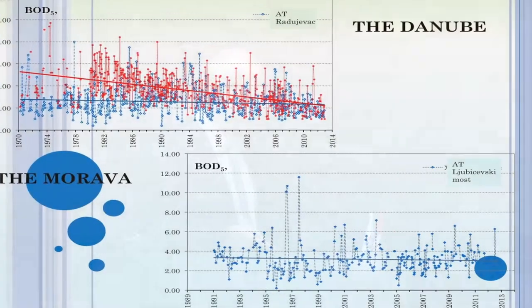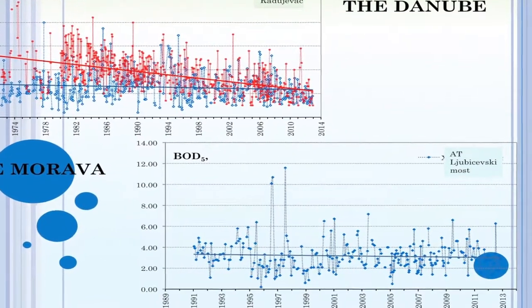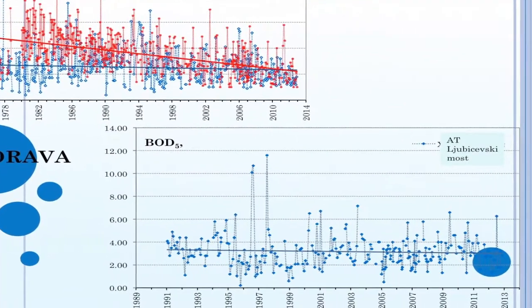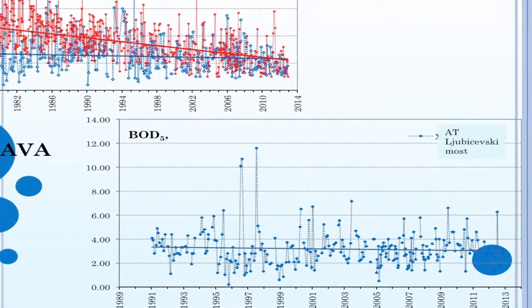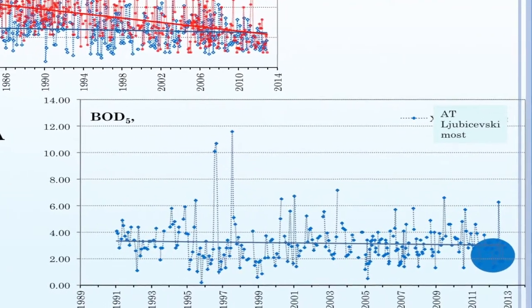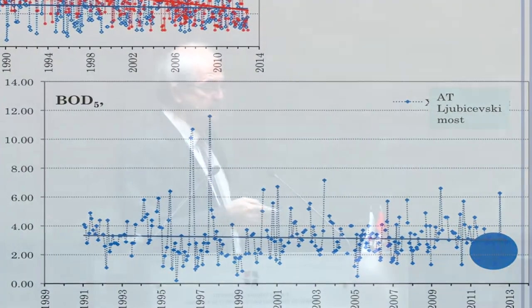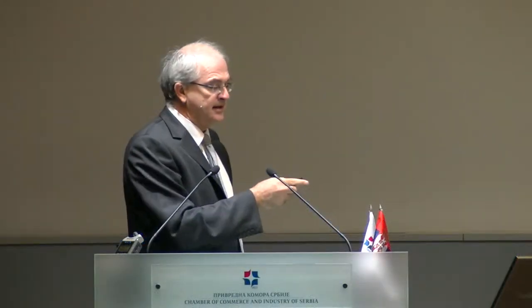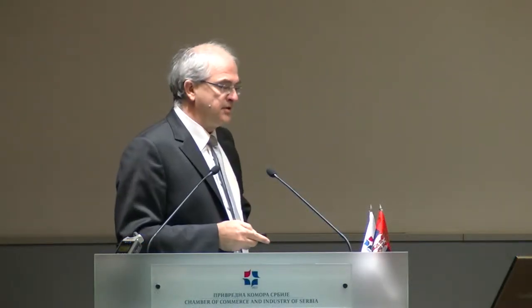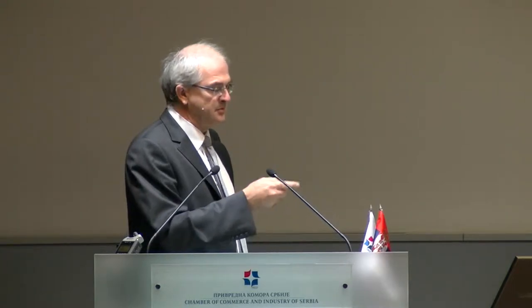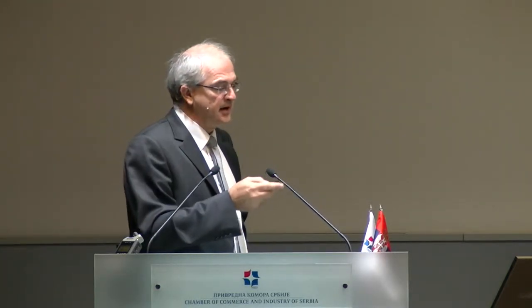The bottom diagram shows BOD at the mouth of our biggest national river, Morava. We see that it practically stagnates over time, due to the lack of wastewater treatment plants. Water quality levels for the Morava are higher — worse — than for the Danube because of the lack of treatment and natural conditions.